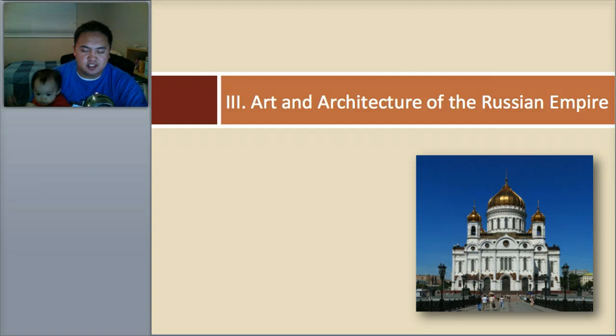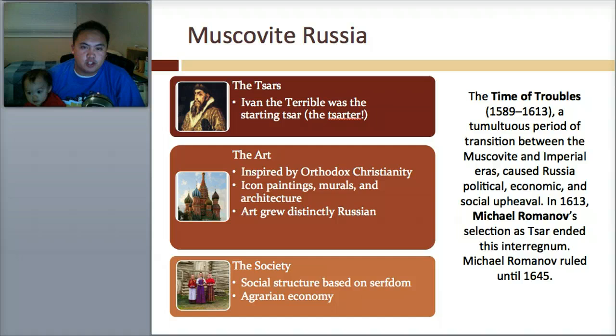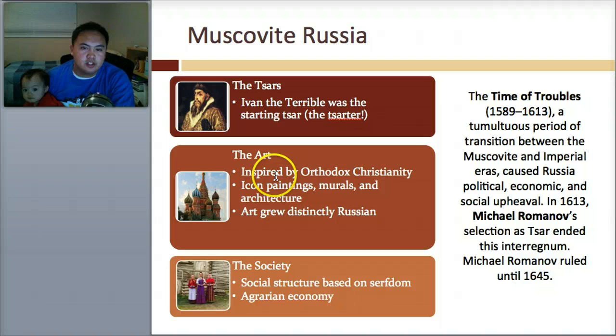First, talking about the Russian Empire — before we talk about architecture, you sort of have to know the history of it. We're going to talk about Muscovite Russia, the Tsars, specifically Ivan the Terrible. They make a little joke here that he was the starting Tsar, or the Tsarter. His art was inspired by Orthodox Christianity. There were icon paintings, murals, architecture, and art grew distinctly Russian.